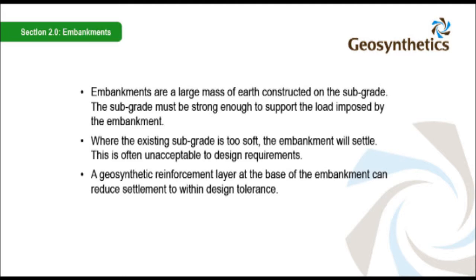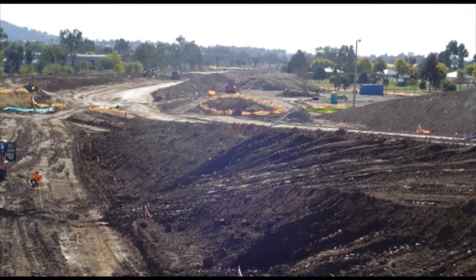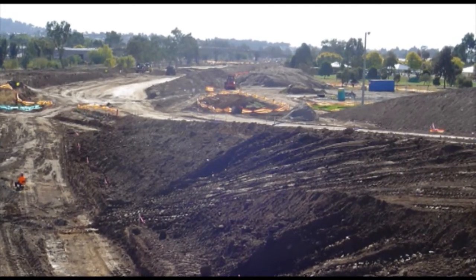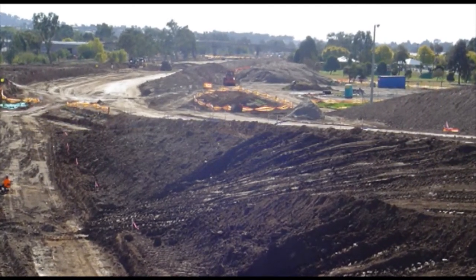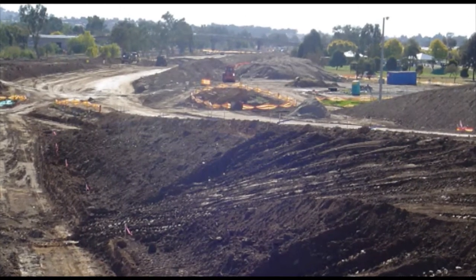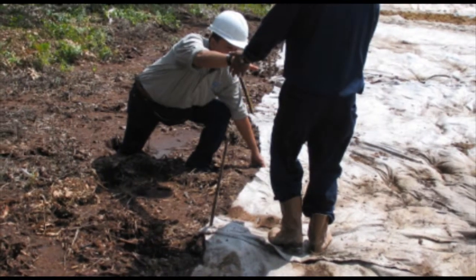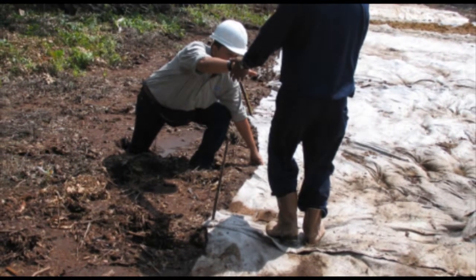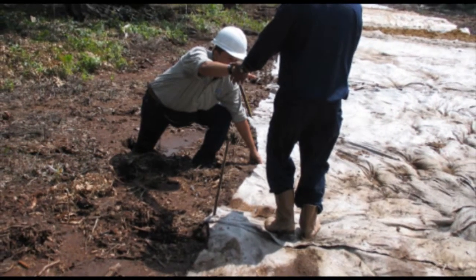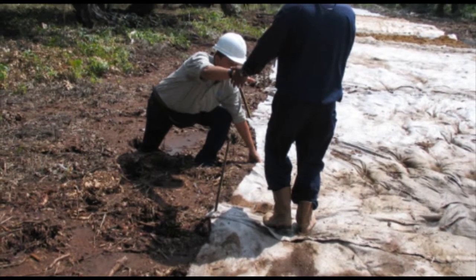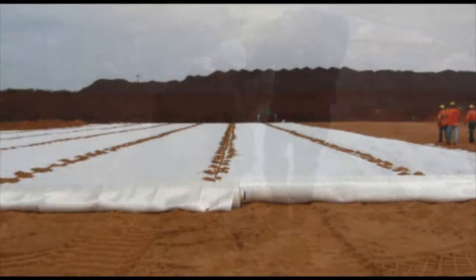A geosynthetic reinforcement layer at the base of the embankment can reduce settlement to within design tolerance. Here you see an embankment being used to align the road. Think about how much dead load is being applied to the underlying soil. In this instance the soil will not even take the weight of a person. The geotextile is a very simple yet effective reinforcing element.